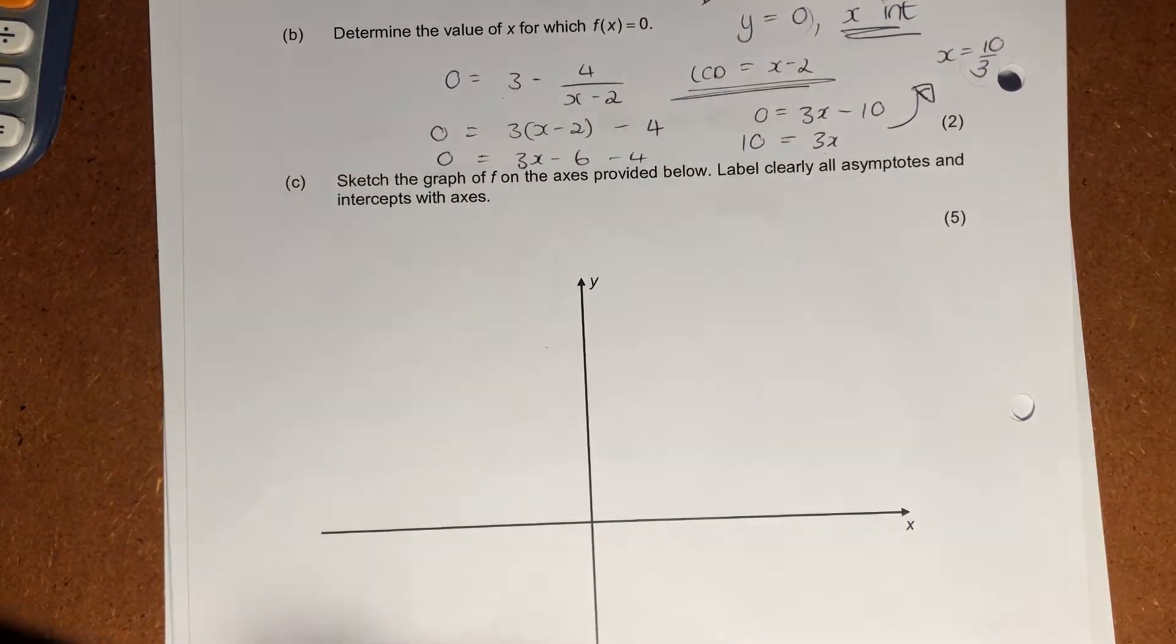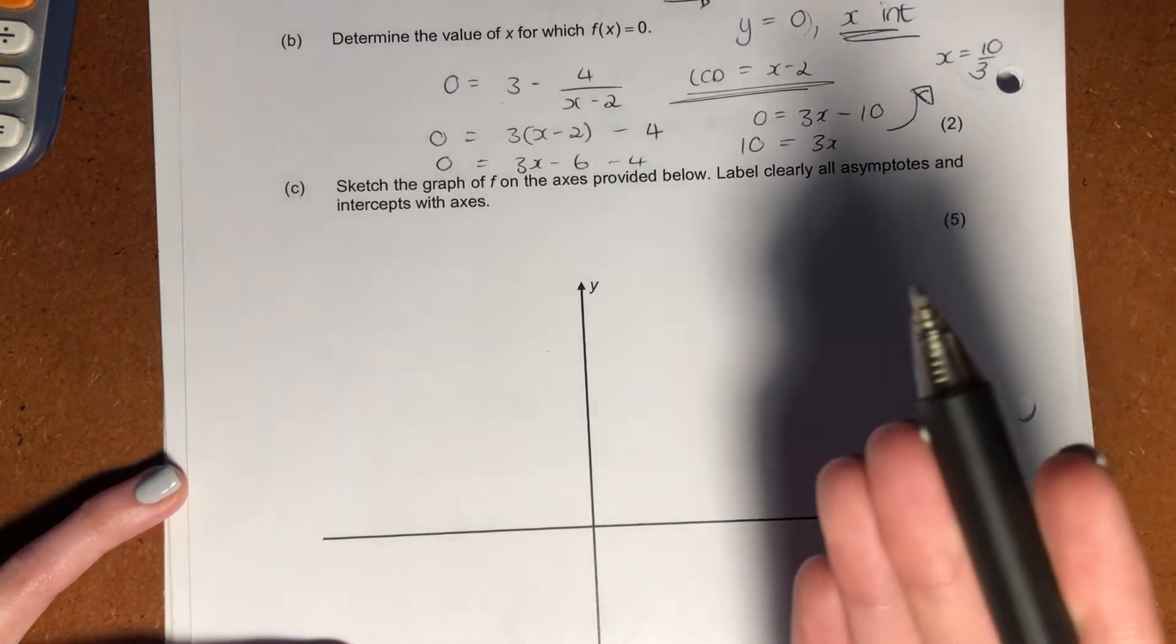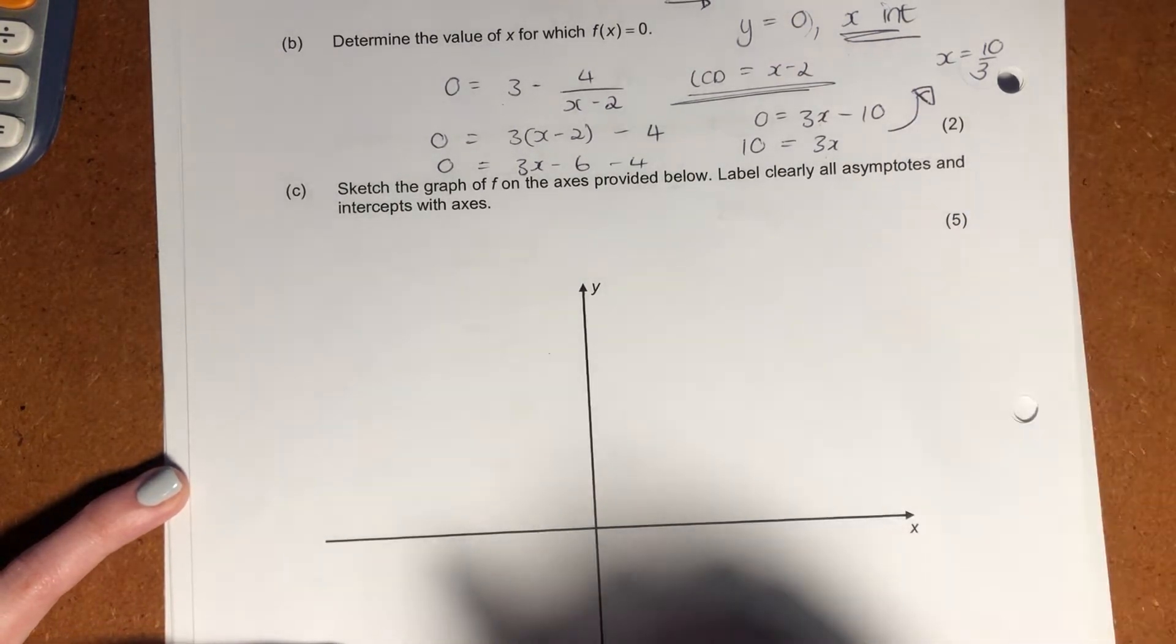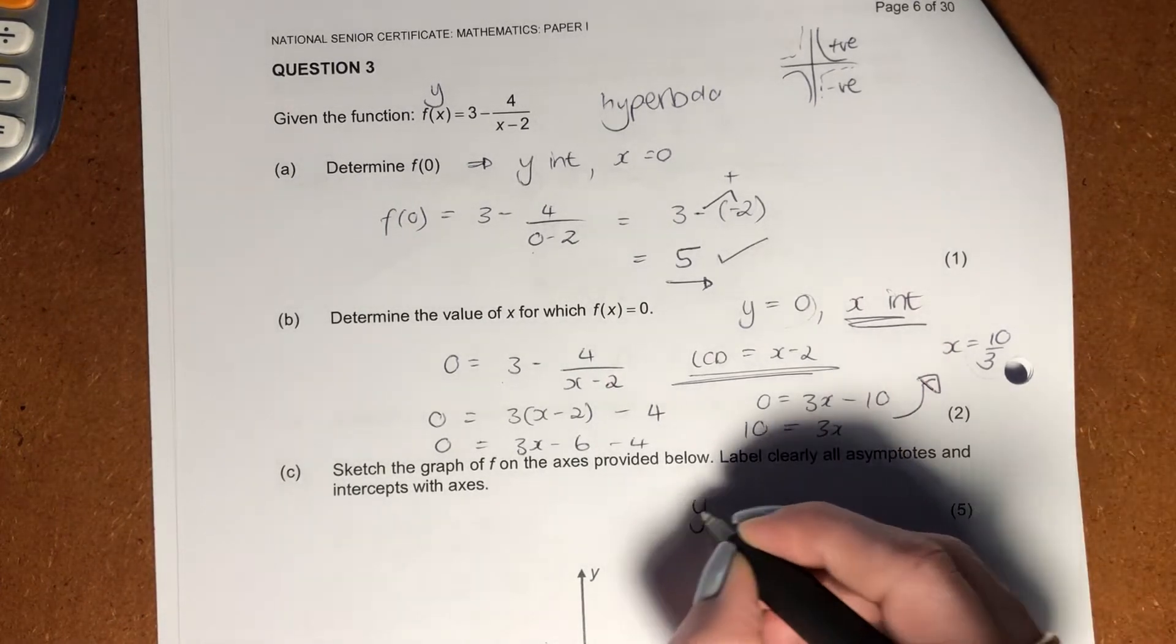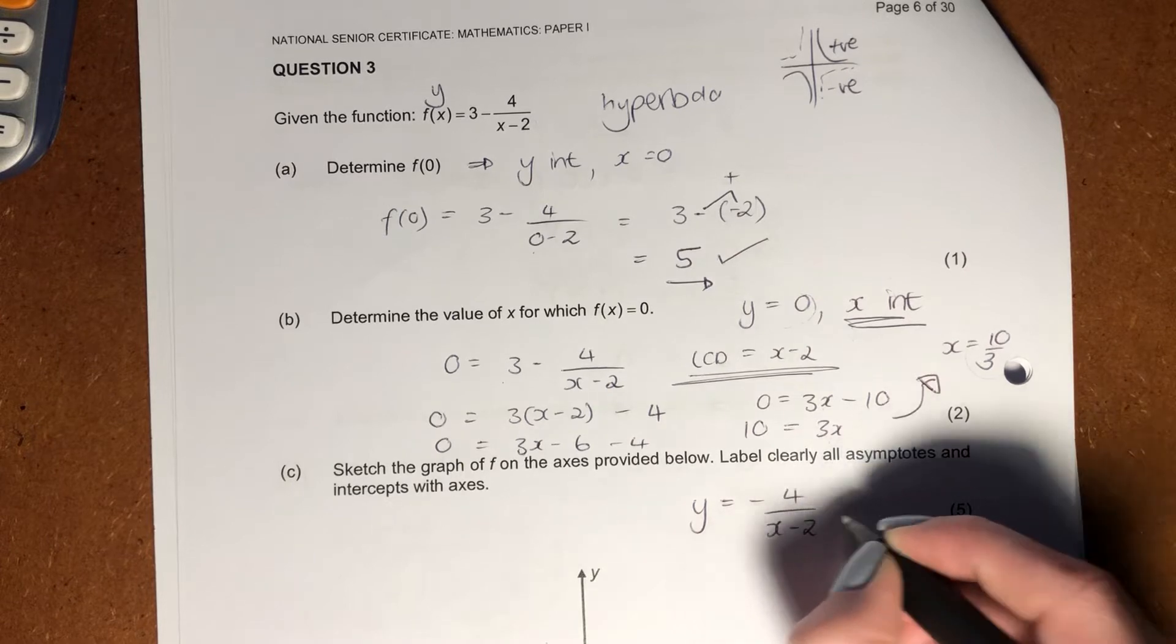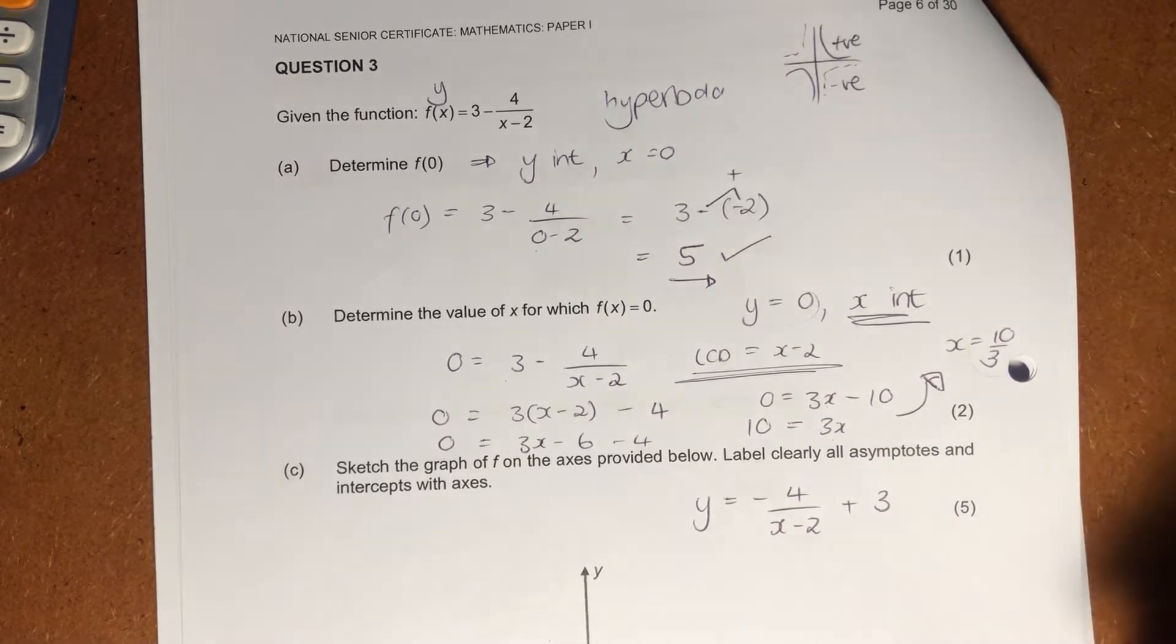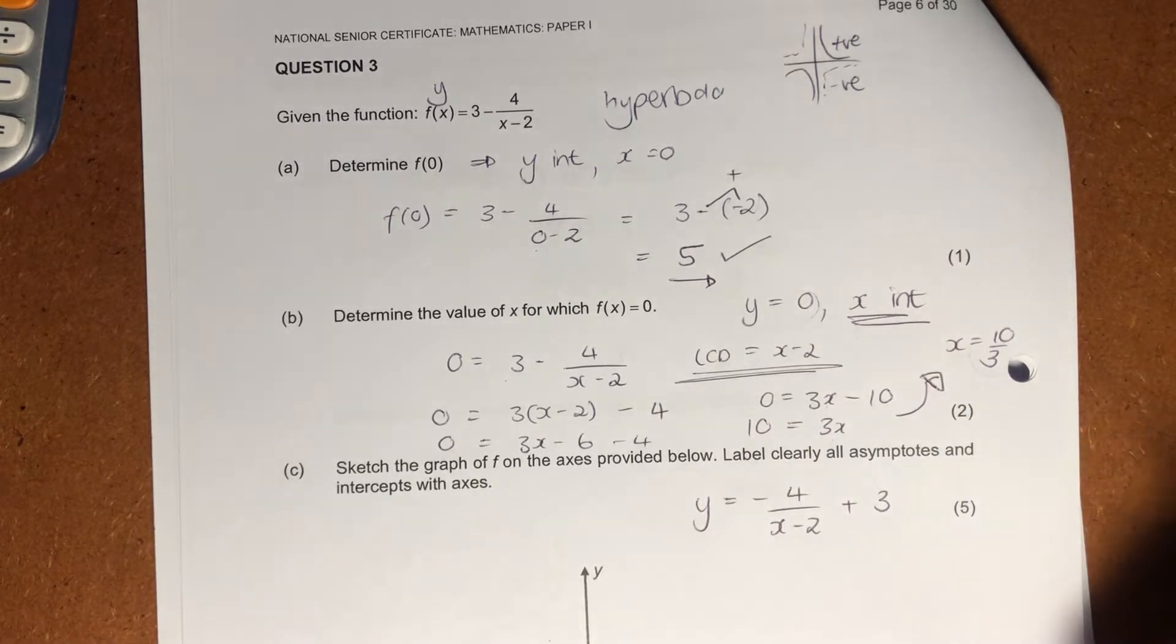It says, well, please go sketch this graph. If we didn't have our intercepts, it would be difficult to sketch, but because of our previous two questions, we do have our intercepts, which is really handy. So what I want to do is I just want to rewrite our equation in this form. Now you could be thinking to yourself, well, why has she done that? It just helps me navigate around a hyperbola.